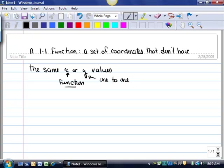You had to have different x values. It didn't matter what your y values were. But if it's going to be a one-to-one function, both the x and the y values have to be different.